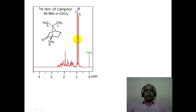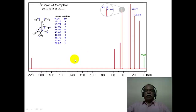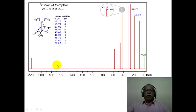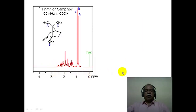Comparing camphor spectra illustrates the advantage of carbon-13 NMR. The proton NMR spectrum of camphor is largely unresolved except for the three methyl groups A, B, and C; all other hydrogens appear as a bunch of unresolved signals. In contrast, the carbon-13 spectrum shows each carbon separately as a well-resolved spectrum, with a spectral spread of 0–220 ppm compared to only 0–12 ppm for proton NMR.